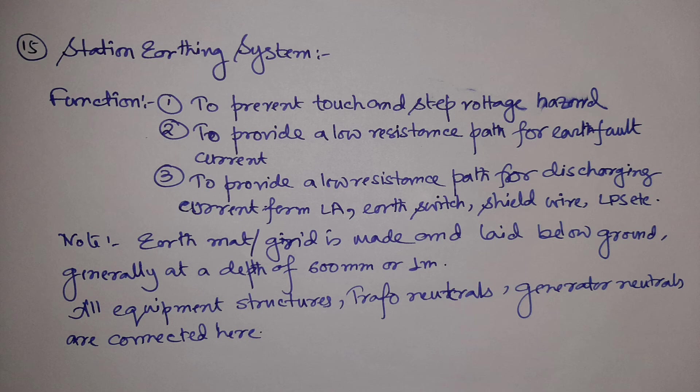The next item is the station earthing system. Although it is not a piece of equipment per se, it is a very essential part of the substation. The earthing system serves three main purposes: first, to prevent touch and step voltage hazards; second, to provide a low-resistance path for earth fault current; and third, to provide a low-resistance path for discharging current from lightning arresters and the lightning protection system.